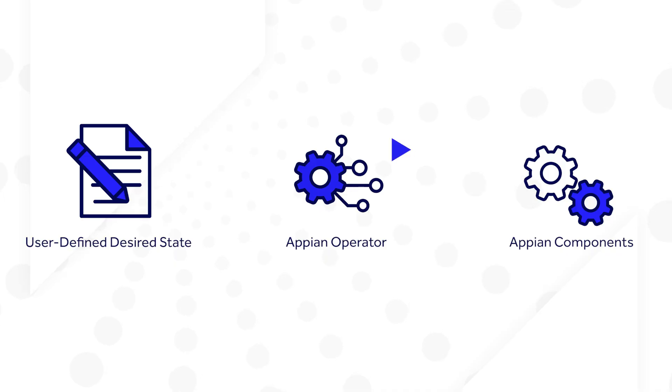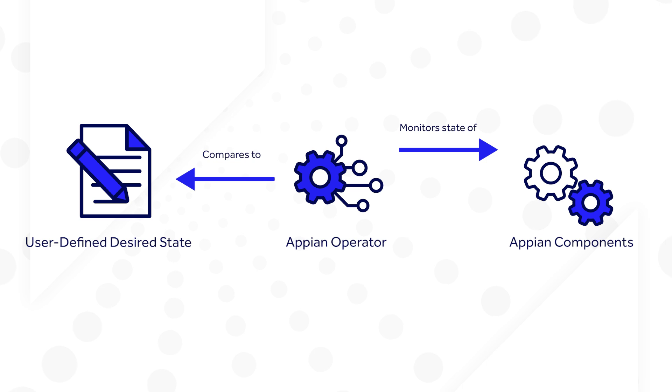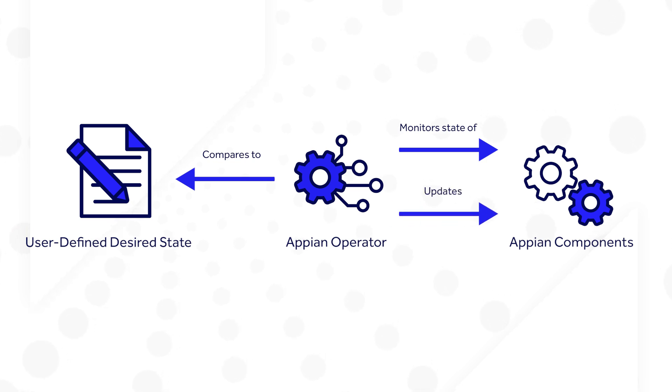In addition, Appian Kubernetes includes the Appian Operator. The Appian Operator expands upon the basic orchestration provided by Kubernetes to automate the starting and stopping of Appian services. It monitors the current state of the system, compares it to the desired state, and then makes changes to the current state to bring it in line with the desired state.